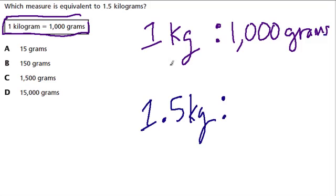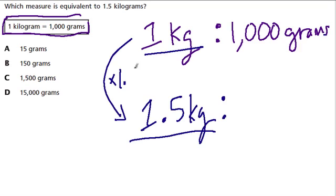What do we do? Well, first we had one kilogram, now we have one and a half. So to get from one to 1.5, we multiply by 1.5, right? Because one times 1.5 is 1.5 kilograms. So to keep everything the same and proportional, we take one thousand and multiply that by 1.5.